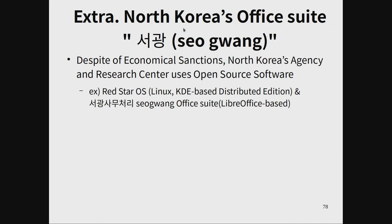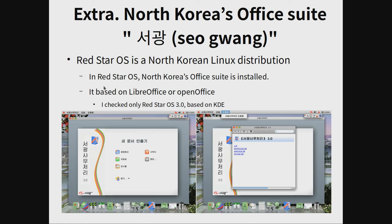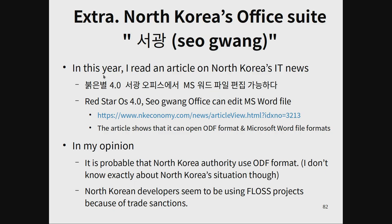North Korea's office suite: Sogang is a LibreOffice-based office suite. Red Star OS is North Korea's Linux distribution, and it includes the LibreOffice-based Sogand office suite. This year I noticed an article on North Korea IT news: Red Star OS 4.0's Sogang office can edit MS Word files. In my opinion, North Korean authorities use ODF files. North Korean developers use free/libre open source software projects because of trade sanctions.